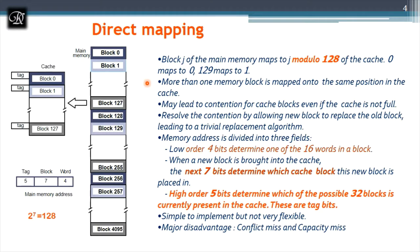This is the textbook example. We have 4K blocks in main memory, ranging from 0 to 1495 — that is 1496 blocks in main memory. In cache, we have 128 blocks ranging from 0 to 127.